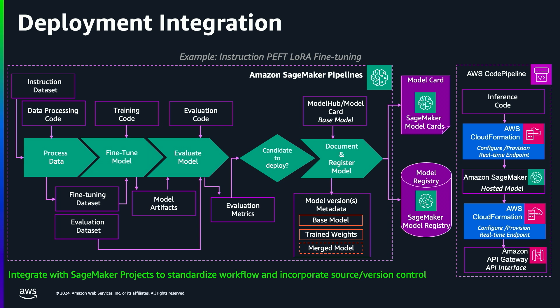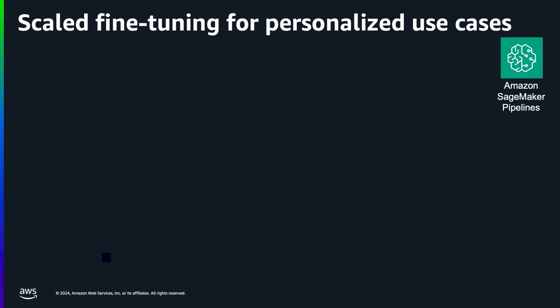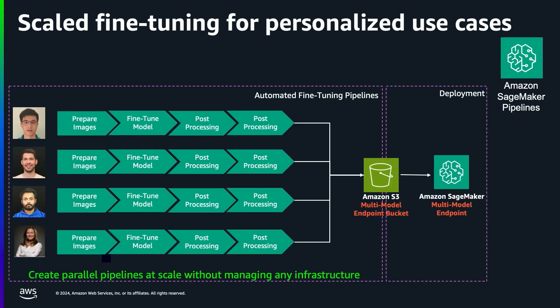This example focuses on regular fine-tuning of a foundation model, providing traceability and reliability. Another use case where fine-tuning workflows are useful is personalization — for example, creating personalized models for an avatar generation use case. In this case, you need the ability to scale out pipelines and create a repeatable, reliable process across personalization use cases. This is handled by SageMaker Pipelines as a managed service, with the ability to scale out multiple pipelines in parallel.